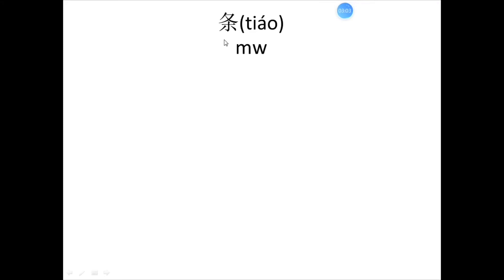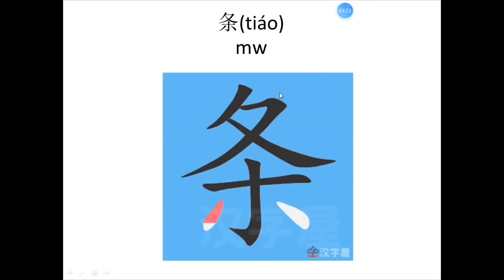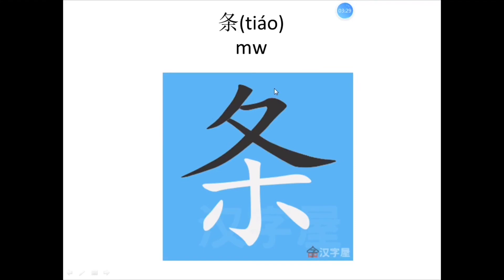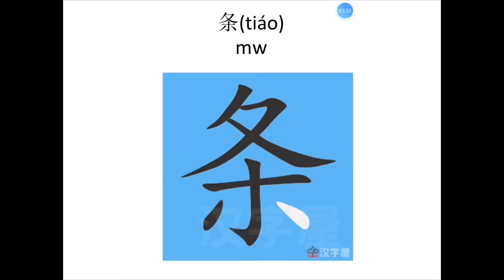下一个词。 请你跟我一起读。 Let's read together. 调。调。 In this context, 调 is a measure word. Let's see how to write it. Upper part, lower part. 一，二，三，四，五，六，七。